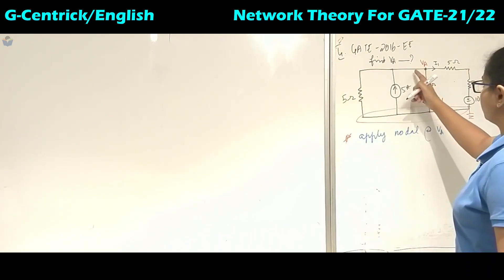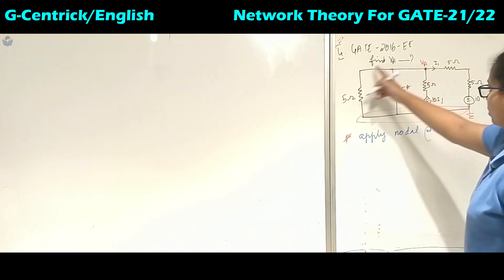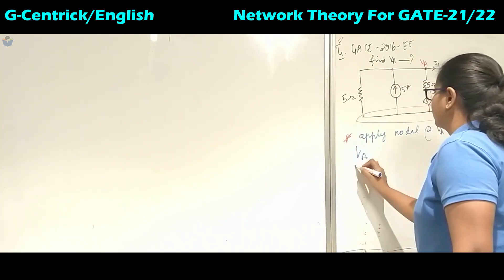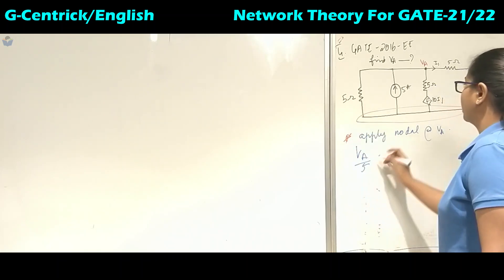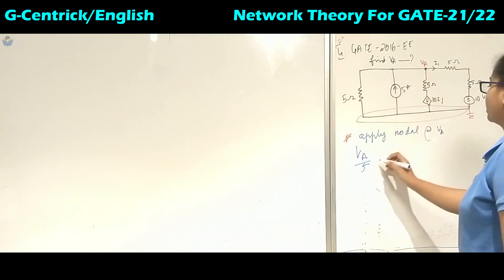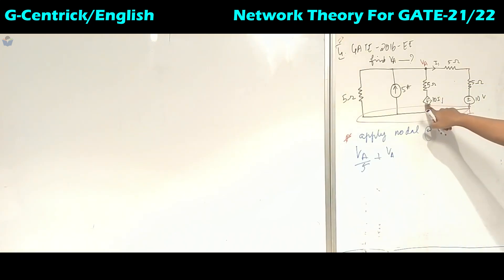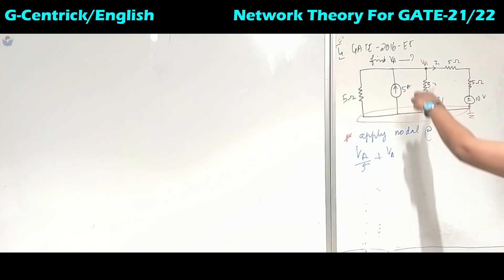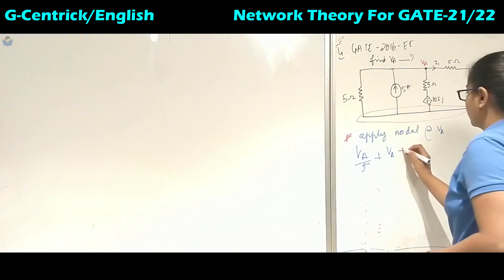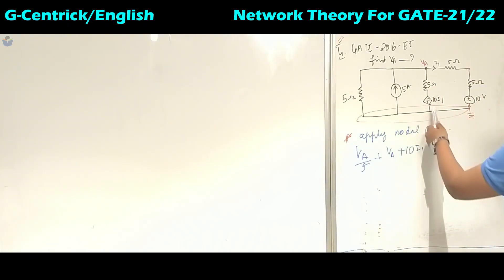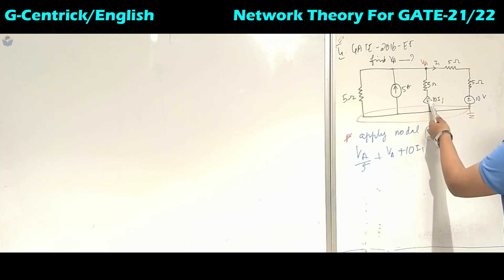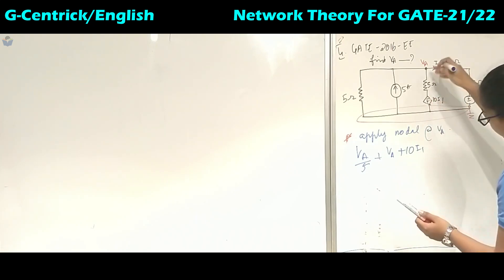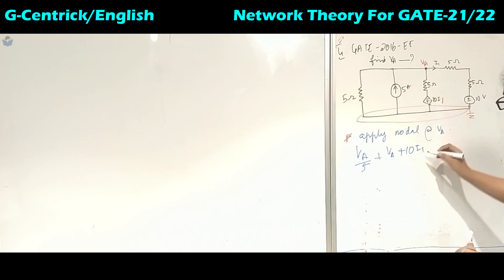There are 1, 2, 3, and 4 branches. VA by 5 — this is incoming. Next VA, and here it is plus 10i. So there is one voltage-dependent source. The clue for this dependent source of i1 is here. So this is nothing but VA plus 10i1 minus 0. This is plus because we are taking the sign in the direction we are coming after the voltage source.